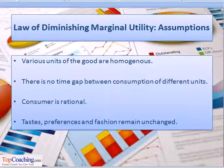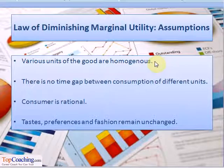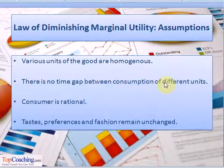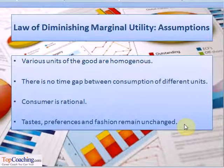The applicability of the law of diminishing marginal utility also requires certain assumptions. First, various units of the good are homogeneous in nature. Second, there is no time gap between the consumption of different units of the commodity. Third, the consumer is a rational being. And fourth, tastes, preferences, and fashion remain unchanged.